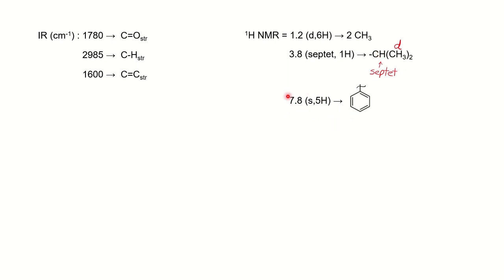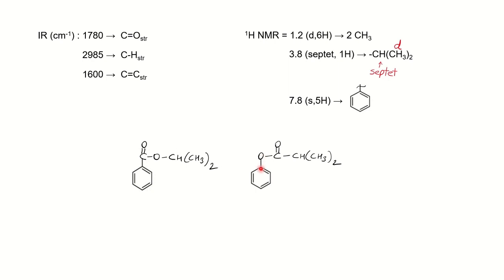The third peak is 7.8 ppm, singlet, 5H — a very characteristic peak for a mono-substituted aromatic ring. 5H in the aromatic region indicates a mono-substituted ring. So the molecule has an aromatic ring and an isopropyl group. The remaining part of the molecular formula is CO2, giving two probable structures: either the carbonyl is attached to the isopropyl group with oxygen connecting to the aromatic ring, or the isopropyl group is attached to the carbonyl directly.